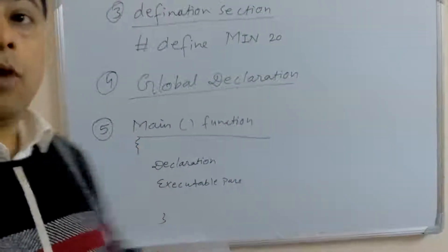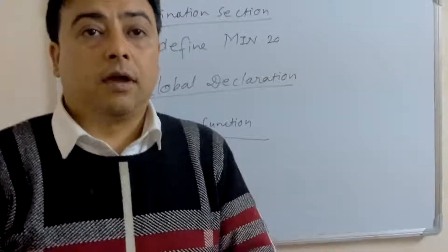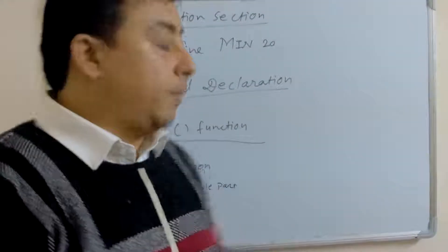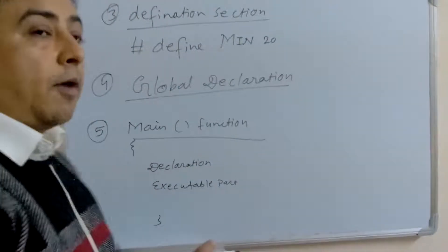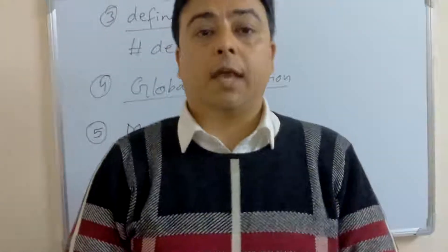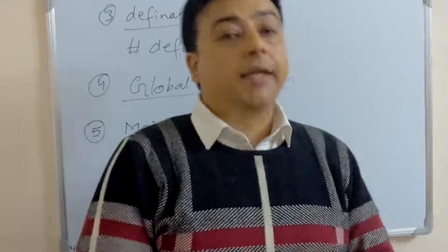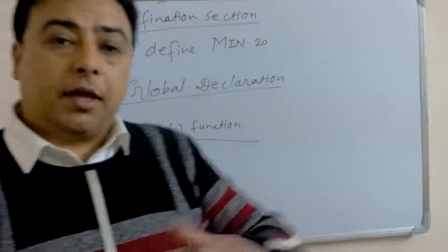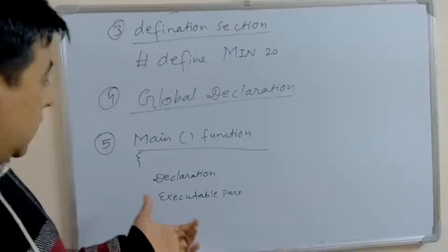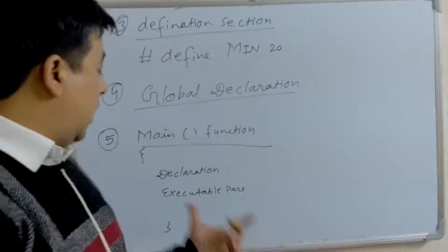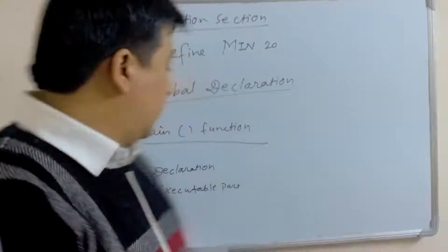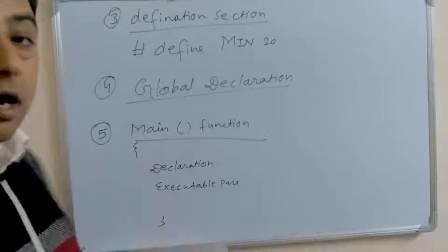C program must have one main function. The program always starts with the curly braces. The declaration part and the executable part are terminated with semicolons. The main function executes user-defined program statements. There may be only one executable part, or there may be more than one executable part. The main function executes the statement and data are enclosed within the curly braces.